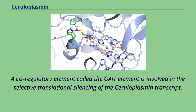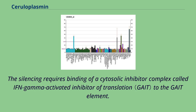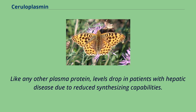A cis regulatory element called the gate element is involved in the selective translational silencing of the ceruloplasmin transcript. The silencing requires binding of a cytosolic inhibitor complex called IFN-gamma-activated inhibitor of translation to the gate element. Like any other plasma protein, levels drop in patients with hepatic disease due to reduced synthesizing capabilities.